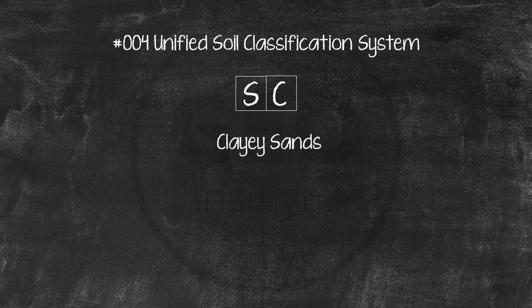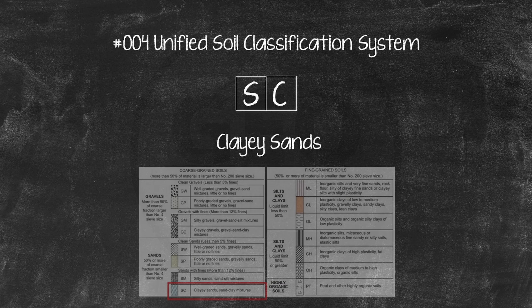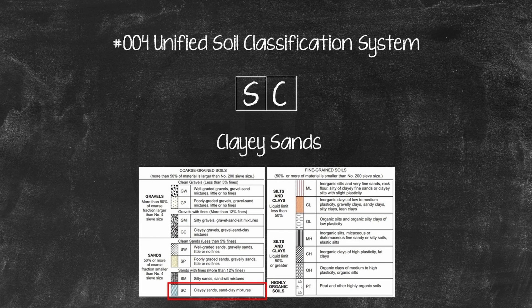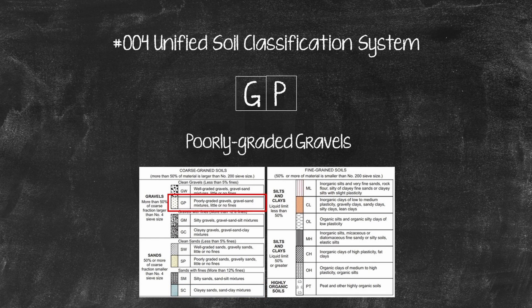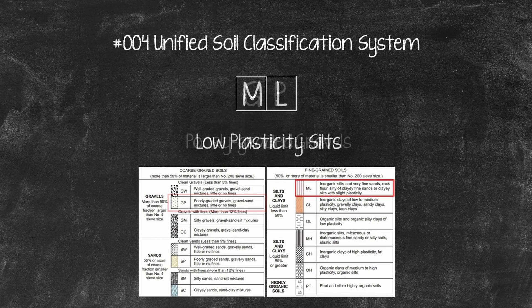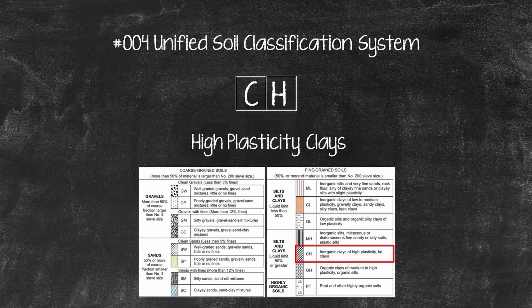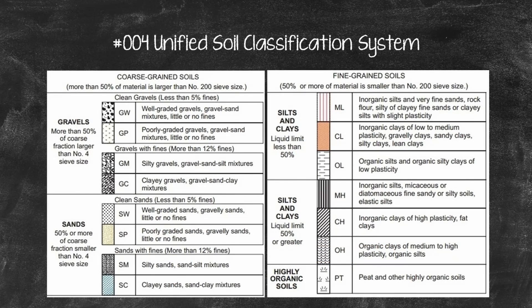For example, SC would be a soil with the majority of its particles in the sand size range, and Atterberg limits of the portion smaller than 0.425 mm consistent with clay. A GP would be a soil with the majority of its particles in the gravel size range, and poorly graded. An ML would be a low-plasticity silt, and a CH would be a high-plasticity clay, both based on their Atterberg limits. The USCS two-letter symbols are understood throughout the world and help geotechnical engineers communicate regardless of their native languages.